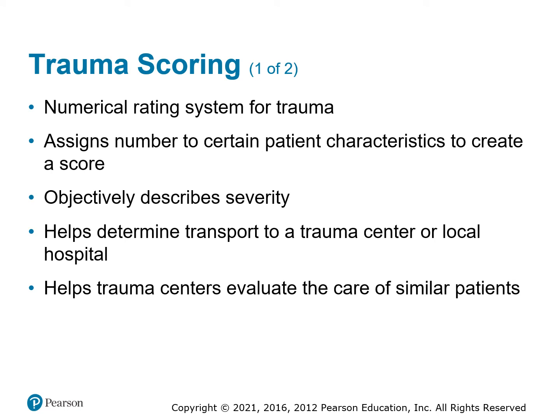Some systems use a trauma scoring system — a numerical rating for trauma. We base it similarly to the Glasgow Coma Scale, which is part of it. We assign numbers to what we find in the patient, and it gives you a good objective observation you can pass on to the trauma center to help them figure out what kind of care the patient needs. Some systems even include it in dispatch to help direct where you take the patient based on availability. Know your system, know what's available, and use the tools you have.